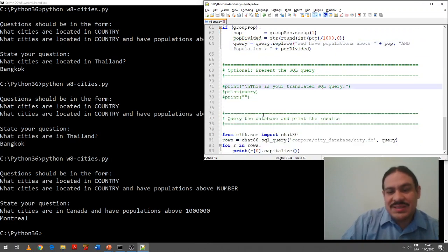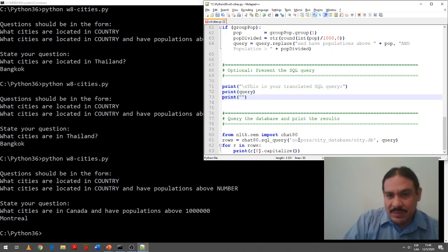So, I commented this out, but this prints the SQL query that the computer constructed. And then we can send it to this module, which is an example of semantics of NLTK, which contains our database. It queries the database, it returns a number of rows and I'm just printing the first row that it returns and making it a capital letter, Montreal.